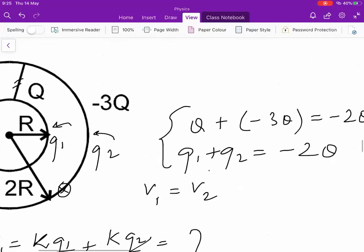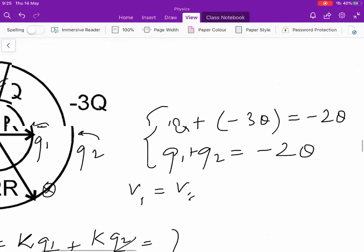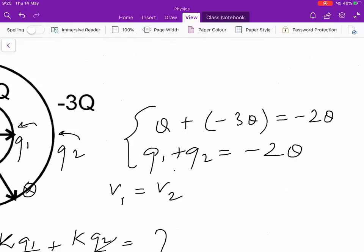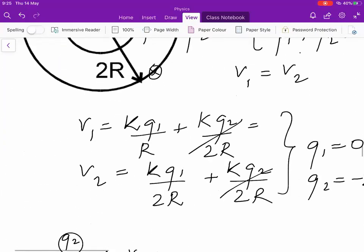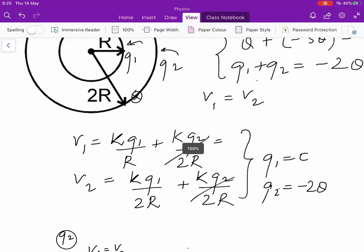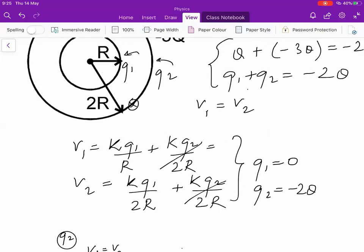So first, total charge is minus 2Q in the system. That will also remain same after redistribution, after they become equipotential. Then you write the expression for their individual potentials, equate them and find out that q1 is 0 and q2 is minus 2Q.